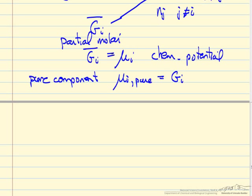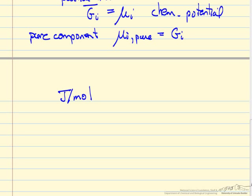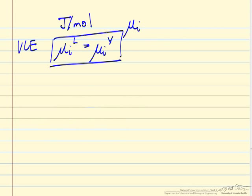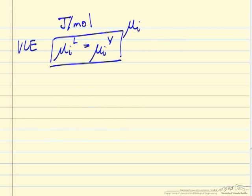We will end up not using chemical potential as much as other variables. Keep in mind that Gibbs free energy is like enthalpy in that there is no absolute scale — we pick some reference condition and say enthalpy is zero there. The same applies to entropy, and then we can calculate Gibbs free energy. As we show, for example, in vapor-liquid equilibrium, component i in a mixture in the liquid phase has the same chemical potential as in the vapor phase, and this is our equilibrium criterion. However, we end up creating another variable that is easier to work with: fugacity.